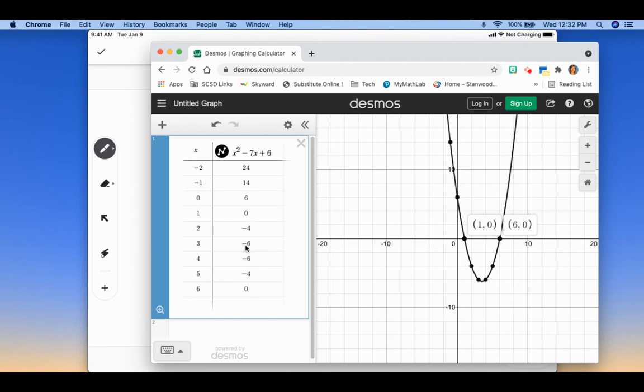You can even kind of approximate where the vertex is going to happen because you can see the symmetry in the table as well. Negative 6 and negative 6, negative 4 and negative 4, 0 and 0. So we know that the vertex is probably happening between 3 and 4.